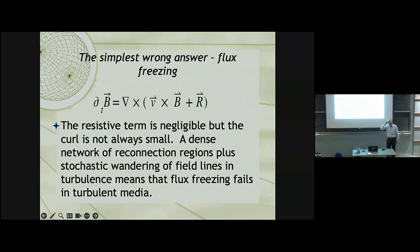So the simplest answer for why a magnetic field might behave that way is an incorrect one. It appeals to the notion that in a highly conducting plasma, the magnetic field is frozen into the plasma. So if the plasma moves inward, the magnetic field moves inward, and that's the way it goes.